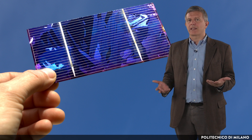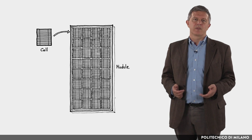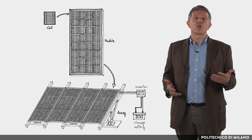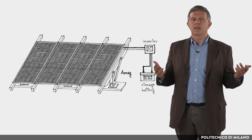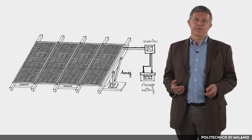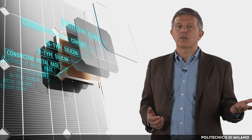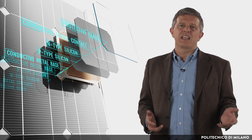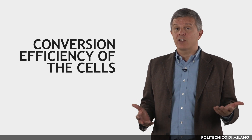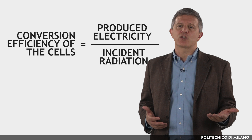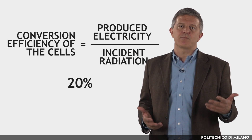In order to be protected from weather and external factors, the cells are assembled into modules. These modules are usually grouped into strings, which in turn are connected to the control and storage devices: inverter, charge regulator and batteries. Commercial modules are available with areas ranging from about 0.5 to 2 square meters and a weight of about 15 kg per square meter. The conversion efficiency of the cells — the ratio between produced electricity and incident radiation — can reach up to 20% and more.